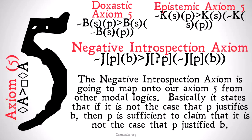Basically, what we're saying is that if it's not the case that P justifies B, then having the belief that P is sufficient justification for the claim that it's not the case that P justifies B. So if in fact it is the case that P does not justify B, then simply having the piece of evidence P justifies the claim that it's not the case that P justifies B. We can justify the negation of our justification via simply that piece of justification that is not justification for B.